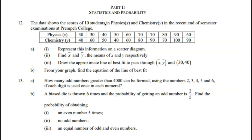Question 13: How many odd numbers greater than 4000 can be formed using the numbers 2, 3, 4, 5, and 6, if each digit is used once in each numeral?